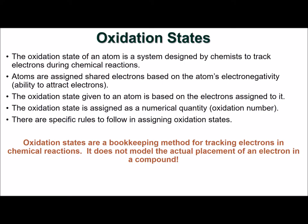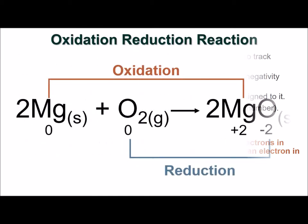To keep track of electrons in a redox reaction, we need to assign oxidation states to the atoms in the reaction. Atoms in a molecule are assigned shared electrons based on the atom's electronegativity. The oxidation state is based on the number of electrons that have been assigned to an atom. The oxidation state is a numerical quantity, and there are specific rules to follow in assigning oxidation states. It is important to remember that oxidation states are simply a bookkeeping method for tracking electrons in chemical reactions. Oxidation states do not model the actual placement of an electron in a compound.